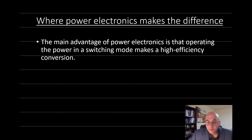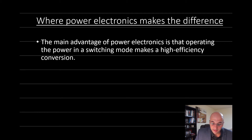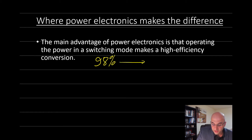Where does power electronics make the difference in power conversion systems? The main advantage of power electronics is that when we operate power in a switching mode, this makes for a high efficiency power conversion. The efficiency of power electronics converters may approach as high as 98 to 99 percent, which is a very high efficiency.